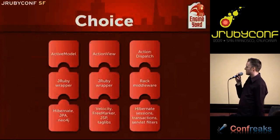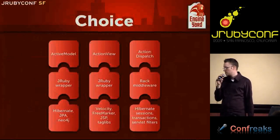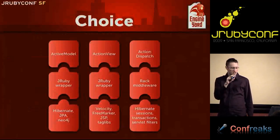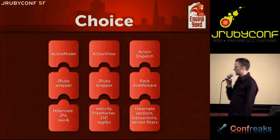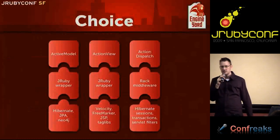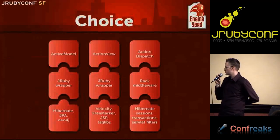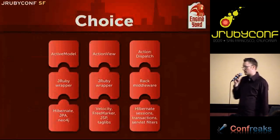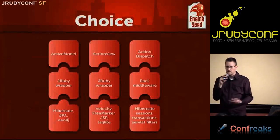I'd like to propose wrappers for Hibernate and JPA. There's also a graph database written in pure Java called Neo4j — Andreas Ronge has a Ruby-based wrapper ready to go, just waiting to be integrated into ActiveModel. As far as views go, what about Velocity, JSP, or Java taglibs inside Rails views? It sounds horrible, but it's going to be the reality of the Java world, so why not embrace it? And for Rack middleware, we want easily available Rack middleware for Hibernate sessions, database transactions, and maybe servlet filters inside Rack.